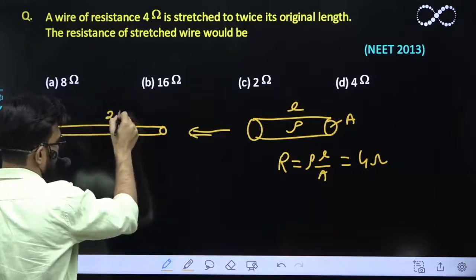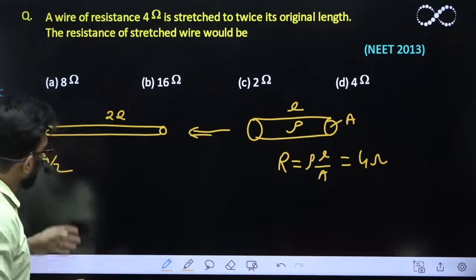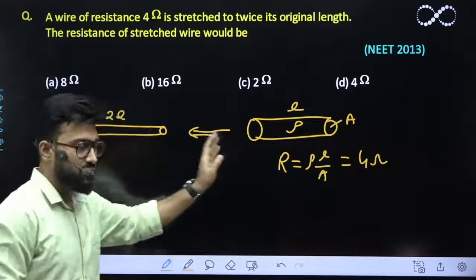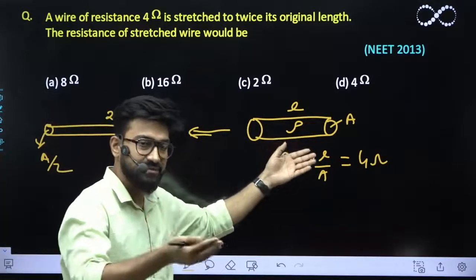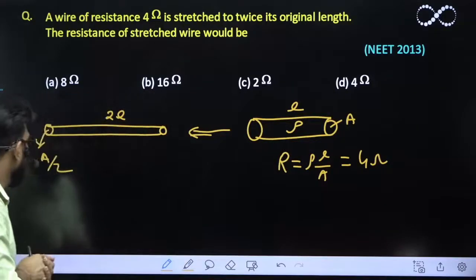We know that if length becomes N times, area becomes 1/N times. You should remember this. So the new area would be A/2.